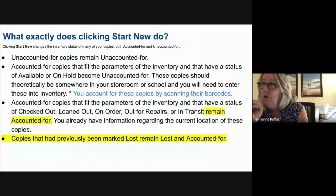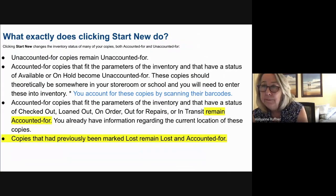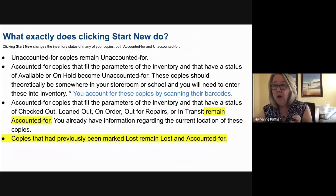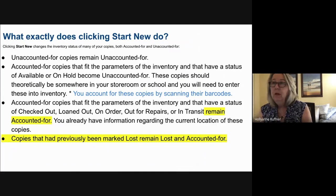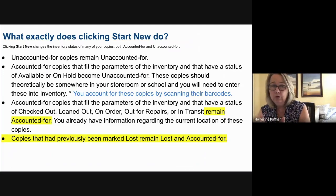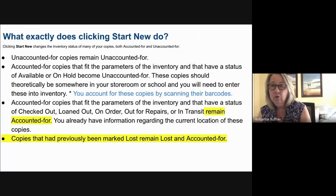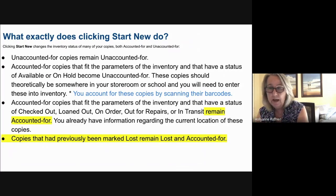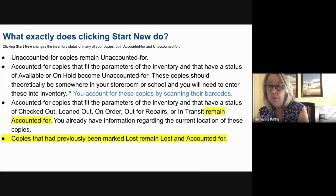Here's what happens when you click Start New: you set up those parameters and click Start. It's taking everything that you described and making it unaccounted for — every single copy. Then as you scan that section, it's accounting for those titles one at a time. When you skip one or don't find it — it's not there for you to scan — those copies are listed as unaccounted for, and they roll over to your lost list when you complete the inventory.